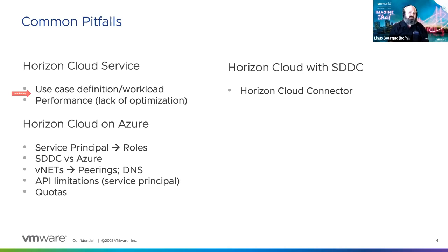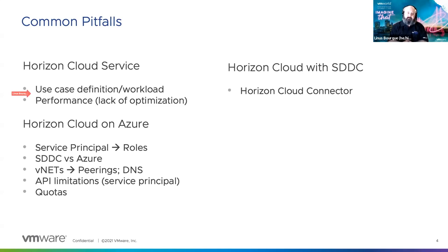Horizon Cloud on Azure has its own specific pitfalls. The biggest ones customers tend to miss: the service principal — make sure it's added into the appropriate role in Azure. The choice between Azure or SDDC — many people assume you can only choose one, but you can use any combination. The big thing is what you want to achieve from your VDI. Some customers use Horizon Cloud on Azure for call centers — easy to stand up, turn off when not needed, save money.